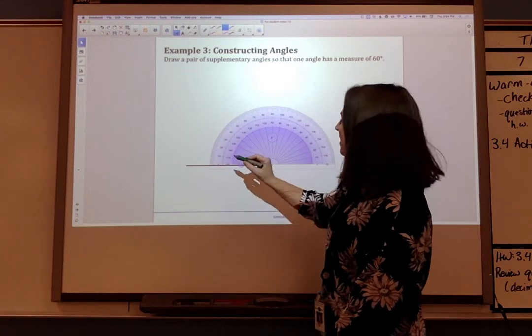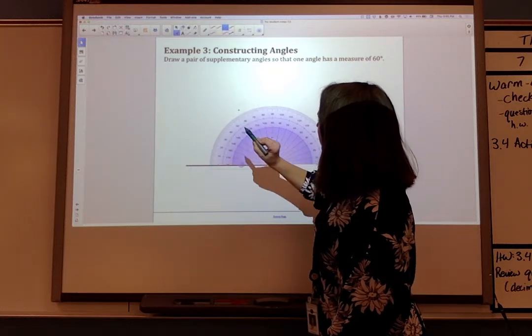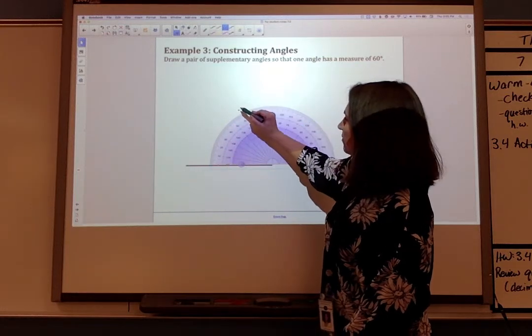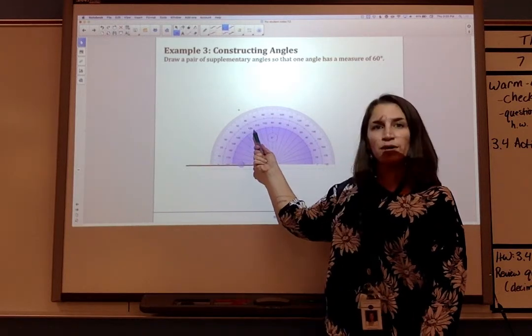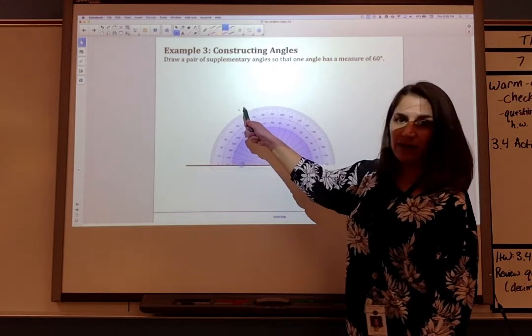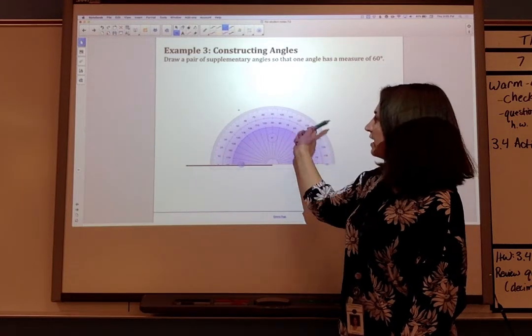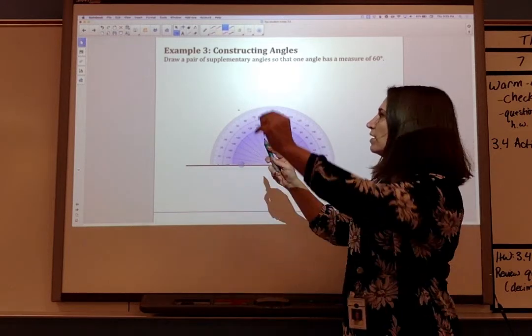All right, sorry about that. Okay, so we've got 10, 20, 30, 40, 50, 60. So 60 degrees is right up here. Remember that when you use a protractor, there are two different numbers, both 60 and 120. That's telling us from this angle, we have 120 degrees from this side. And from this side going up, we have 60 degrees.